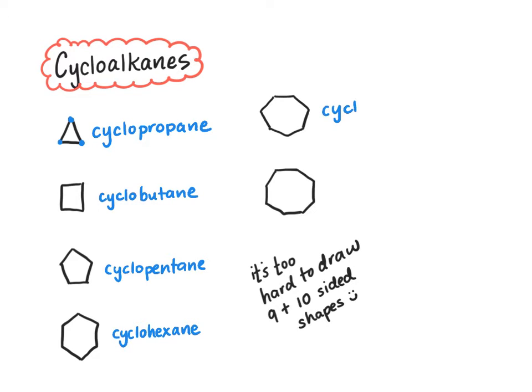It's a little harder to draw them when you get up into the seven and eight-membered rings. So we have cycloheptane, cyclooctane, and I'm not going to draw them because I can't, but we would have cyclononane and cyclodecane. So you won't be asked to draw these big rings. If you have to recognize them just count the sides.